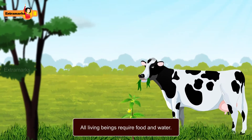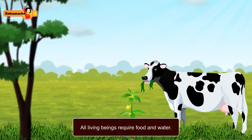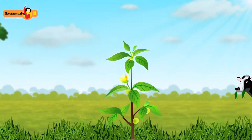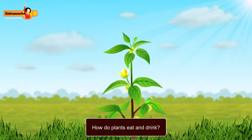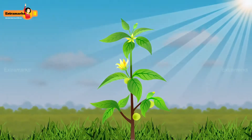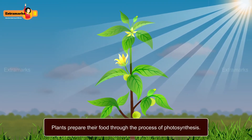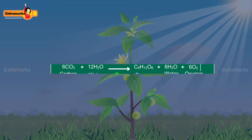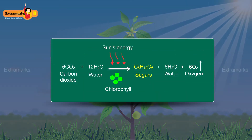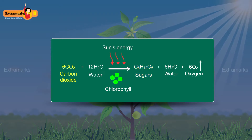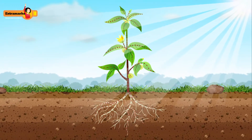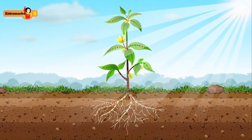All living beings require food and water. Have you ever thought how plants eat and drink? Plants prepare their food through the process of photosynthesis. In this process, food is prepared in the leaves with the help of carbon dioxide and water in the presence of sunlight.